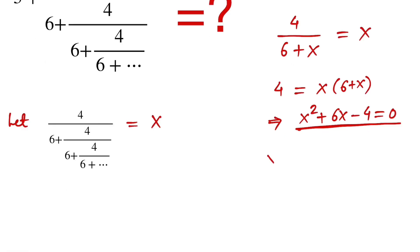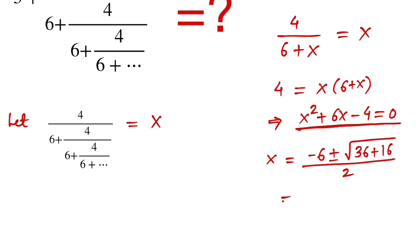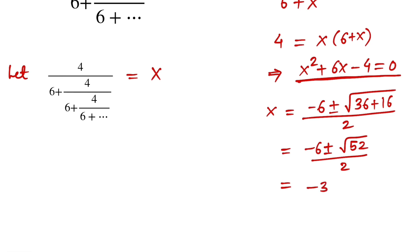We can easily find the roots of this equation using the quadratic formula: x equals (−6 ± √(36 + 16)) / 2, which equals (−6 ± √52) / 2, which simplifies to −3 ± √13.